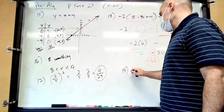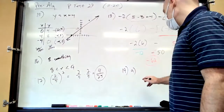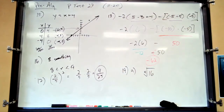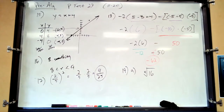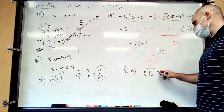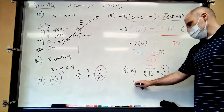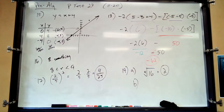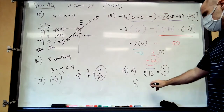Number 19a: what does the little 4 mean inside the radical? It means the 4th root — what number times itself four times equals 16? That's 2. So the 4th root of 16 is 2. For 19b, if there's no index, it's just a square root. Square root of 49 is 7.